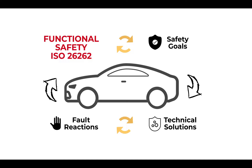Today, road vehicles include more and more software. Modern software enables us to incorporate useful new features into vehicles, such as adaptive cruise control or future autonomous driving. However, software can also cause problems and endanger road users. For example, taking autonomous driving, if the car encounters uncontrolled acceleration, one simple software fault can lead to a tragedy.